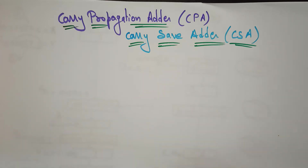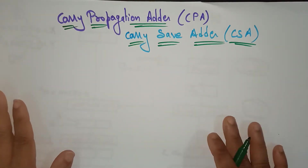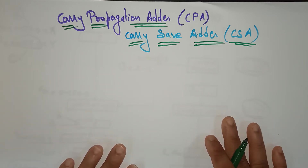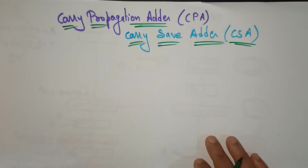Hi students, welcome back. In the previous video I explained about the fixed point arithmetic pipeline organization for the floating point addition and subtraction. Before going to understand the arithmetic pipeline for the fixed point multiplication, I want to give clarity on carry propagation adder and the carry save adder, because these two types of circuits are going to be used in the multiplication, and can also be used for addition.